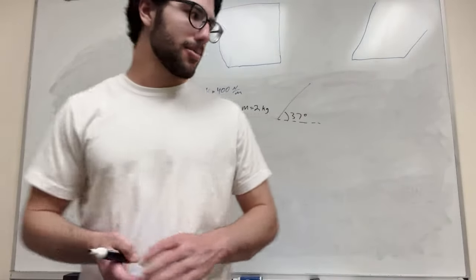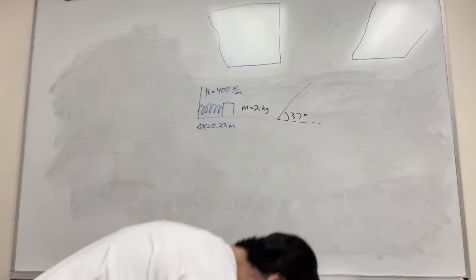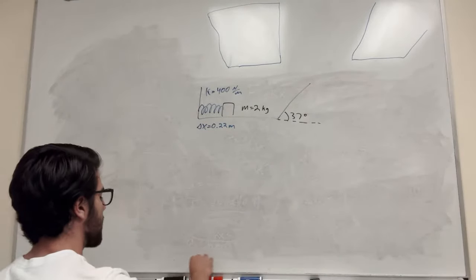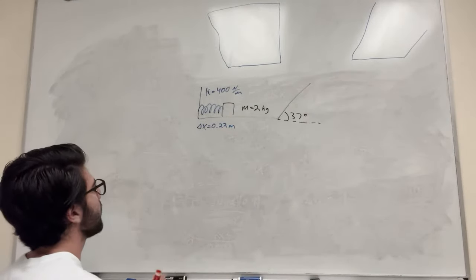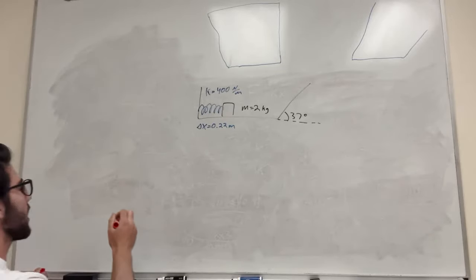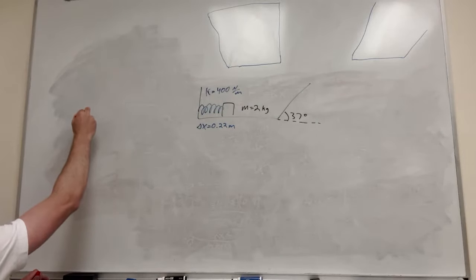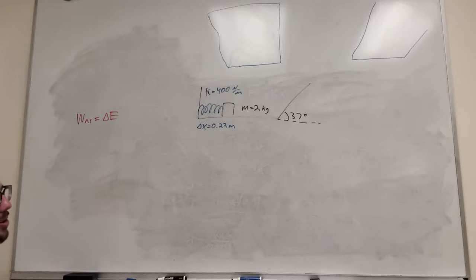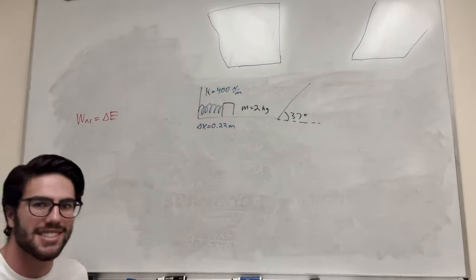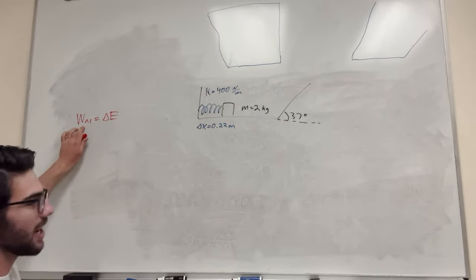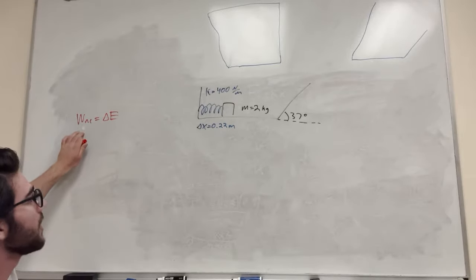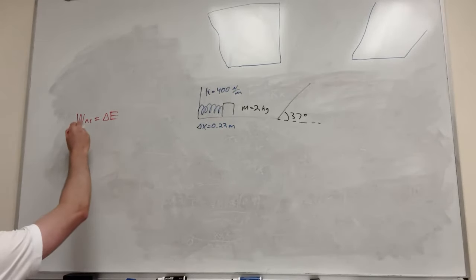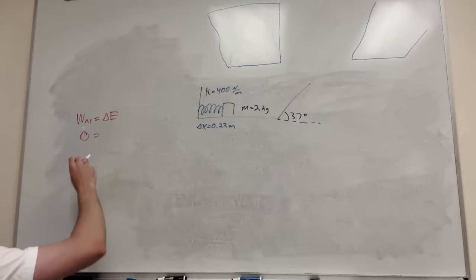So let's start with Part A — find how fast it is after it leaves the spring. To do that we're gonna use our work-energy theorem. The work-energy theorem says work non-conservative is equal to change in energy. Work non-conservative is things like air resistance and friction. We are on a frictionless surface, so we know that this is going to be equal to zero because there's gonna be no force of friction acting on it.